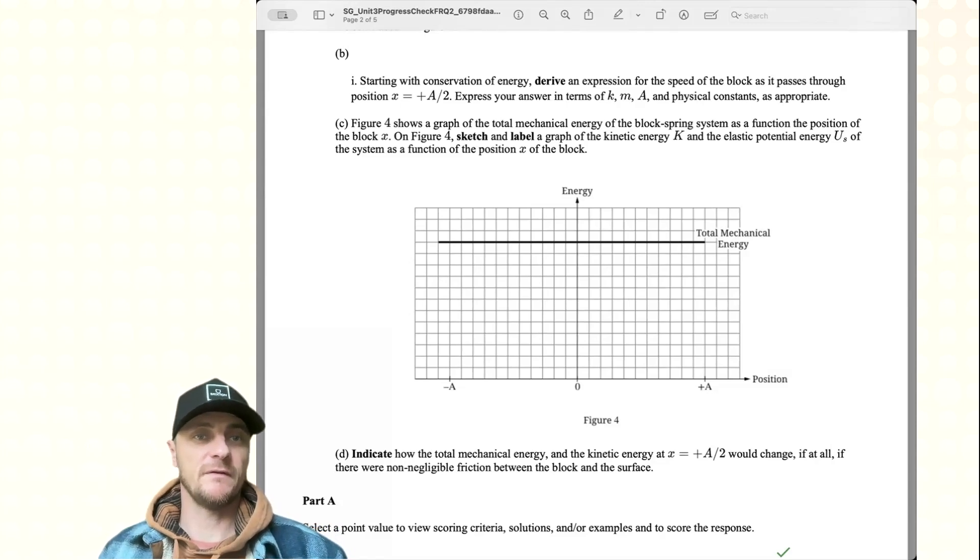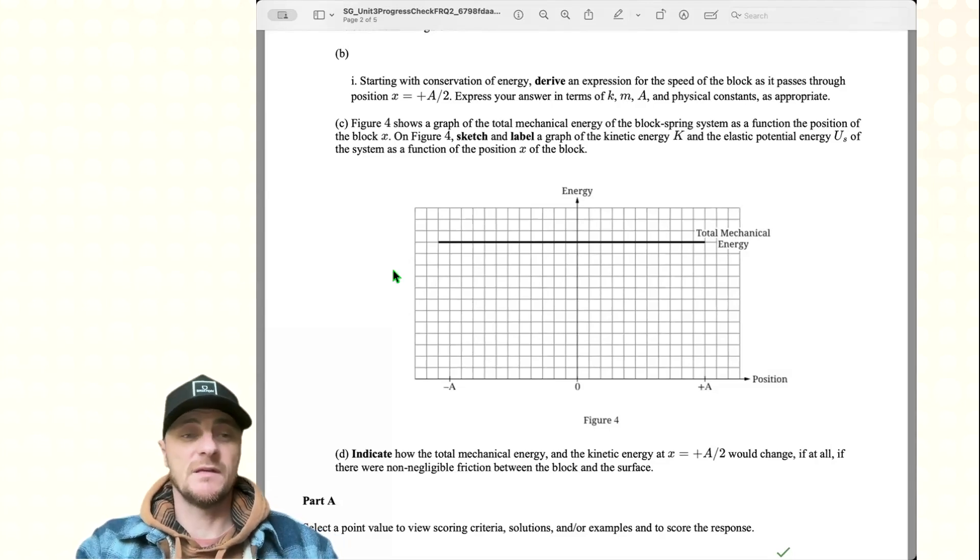Part c: Figure 4 shows a graph of the total mechanical energy of the block spring system as a function of the position of the block x. On figure 4, sketch and label a graph of the kinetic energy k and the elastic potential energy u sub s of the system as a function of the position x of the block. Let's use the ideas we've already discussed. At negative a and positive a, we have maximum elastic potential energy, so I'd put a dot here and a dot here. At our equilibrium position we have no energy in the spring, so I'd put a dot here. This would be the graph for the elastic potential energy. You would have a u shape that came down and curved to zero and then curved upward to the other point.